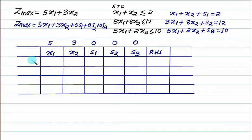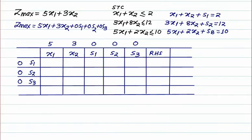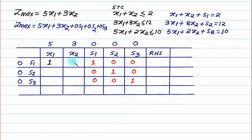The basic variables are s1, s2, s3, with initial Cj values of 0, 0, 0. For s1, s2, s3 the identity matrix entries are 1 each. For the first row: x1 equals 1, x2 equals 1, s1 is 1, s2 and s3 are 0, and the right-hand side is 2.